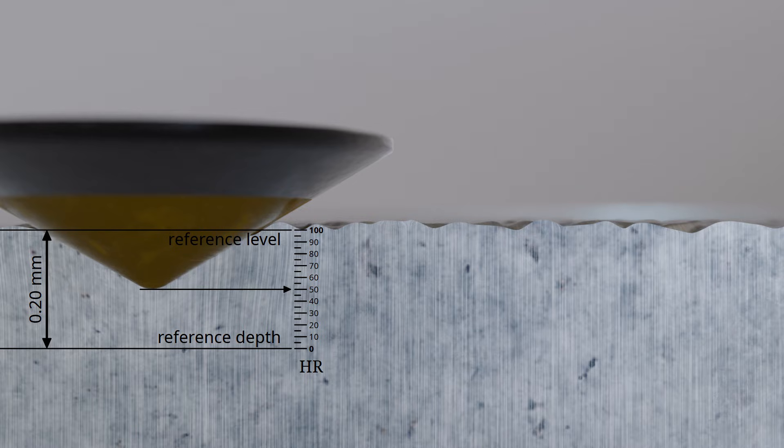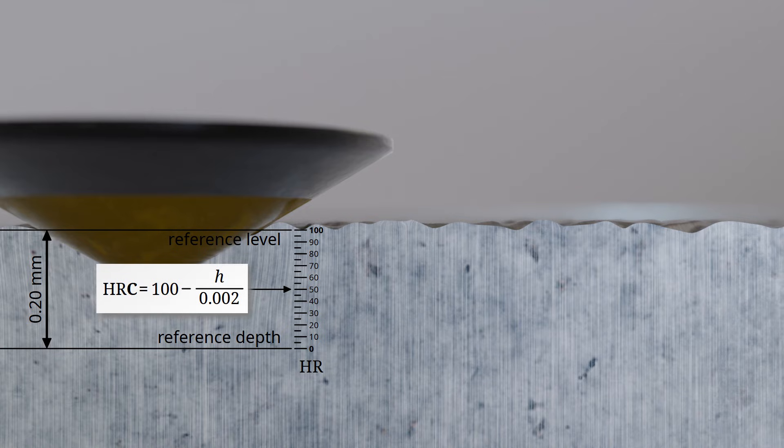Therefore, when diamond cones are used, the Rockwell scale is divided into 100 hardness levels. Using the given formula, the Rockwell hardness value HR can be calculated based on the indentation depth H. The depth H must be specified in millimeters. The testing method using a diamond cone is particularly suitable for very hard materials, such as hardened or tempered steels.